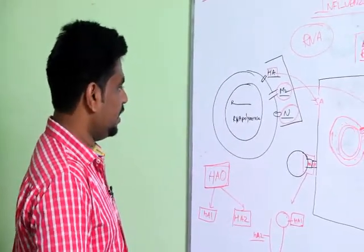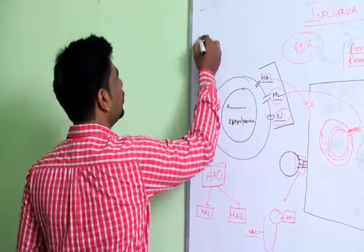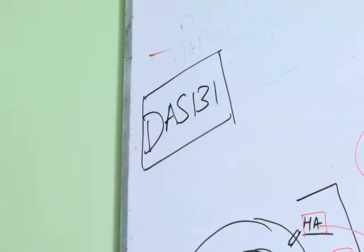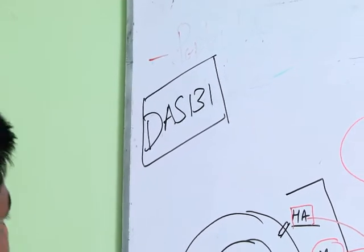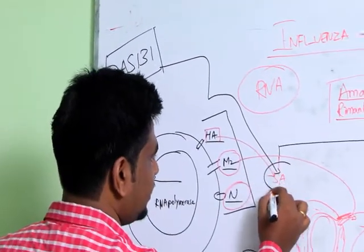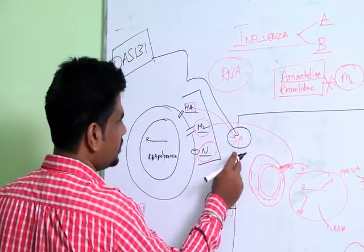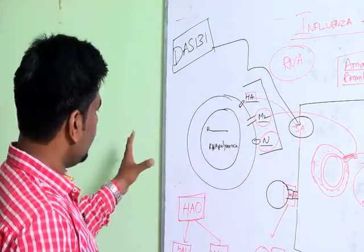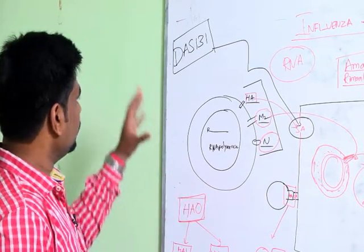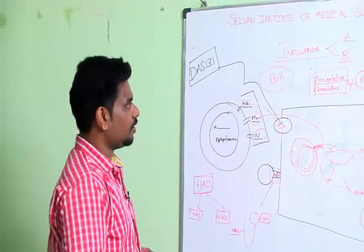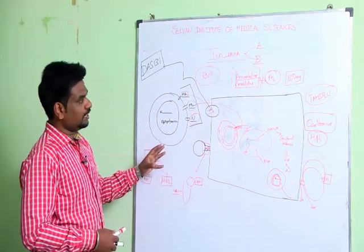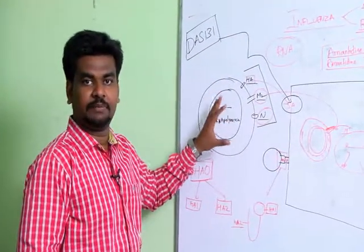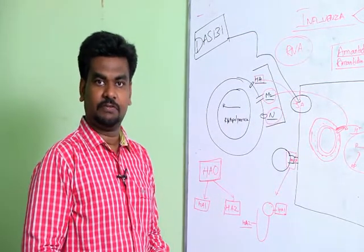A particularly notable drug in development is DAS181. This is significant because it is the only antiviral drug that acts on the host cell — specifically on the sialic acid — so that hemagglutinin cannot bind to the host cell. It is the only antiviral drug to date that targets the host cell rather than the virus itself. So we now have three groups of drugs: DAS181 targeting hemagglutinin binding, M2 channel blockers, and neuraminidase inhibitors — all useful in treating influenza.